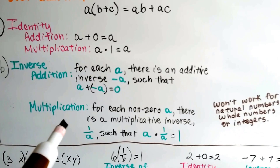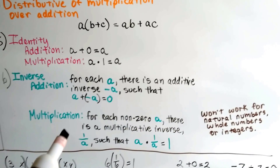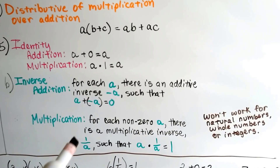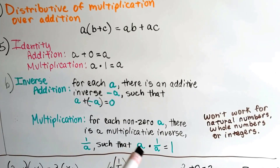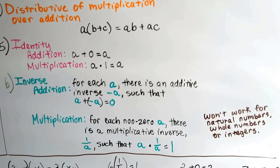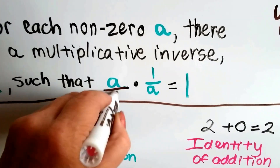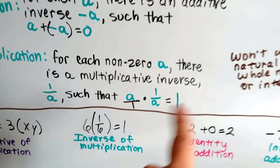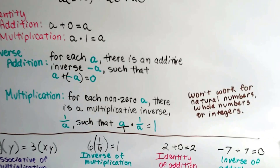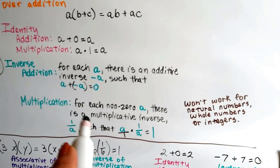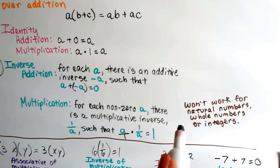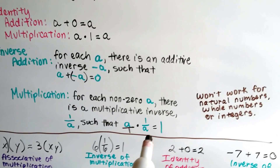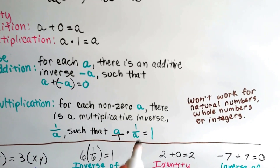The inverse property of addition says for each number a, there's an additive inverse negative a, so that a plus negative a equals zero. The inverse property of multiplication says for each non-zero a, there's a multiplicative inverse one over a, so that a times one over a equals one — like eight times one-eighth equals one, it's going to have the same numerator and denominator. This inverse for multiplication will not work for natural numbers, whole numbers, or integers, because they don't have a fraction — that's a rational number.